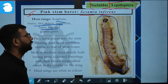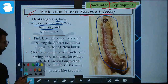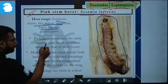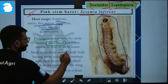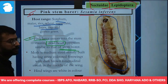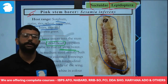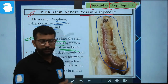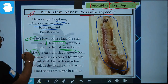The pink larva enters into the stem, causing dead heart symptoms — similar to that of the yellow stem borer. The larvae are generally pink in color and bore into the stem, leading to dead heart symptoms.